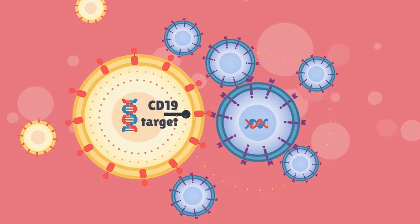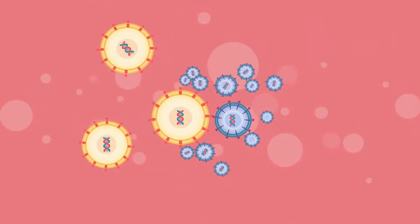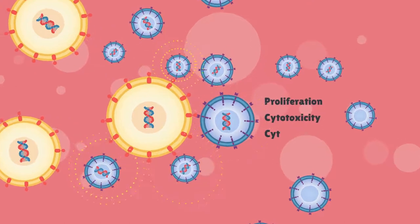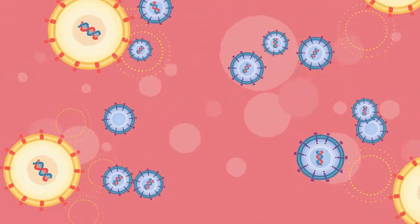CAR T-cells destroy cells through several mechanisms including extensive stimulated cell proliferation, increased cytotoxicity and by causing increased secretion of cytokines, thus recruiting other immune cells.